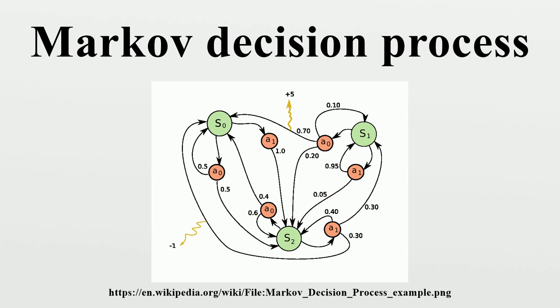The core problem of MDPs is to find a policy for the decision-maker, a function that specifies the action that the decision-maker will choose when in state s. Note that once a Markov decision process is combined with a policy in this way, this fixes the action for each state and the resulting combination behaves like a Markov chain.